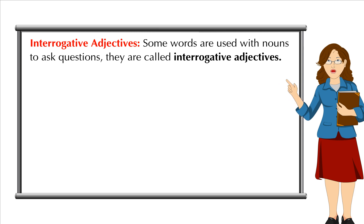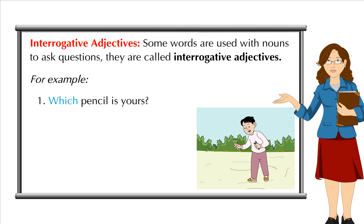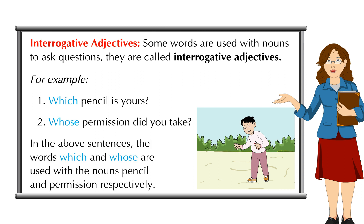Interrogative Adjectives: Some words are used with nouns to ask questions. They are called interrogative adjectives. For example, Which pencil is yours? Whose permission did you take? In the above sentences, the words which and whose are used with the nouns pencil and permission respectively.